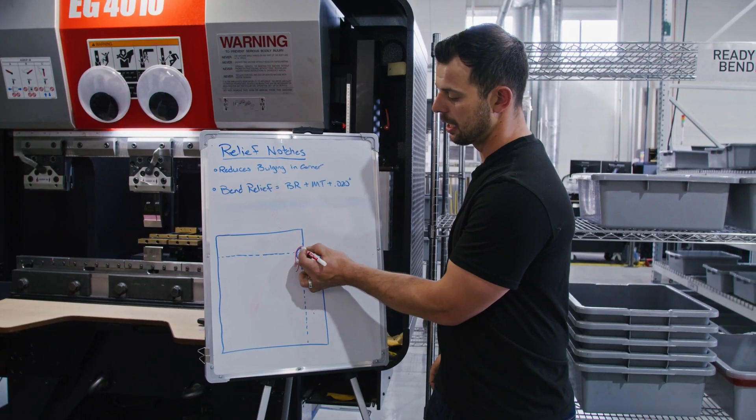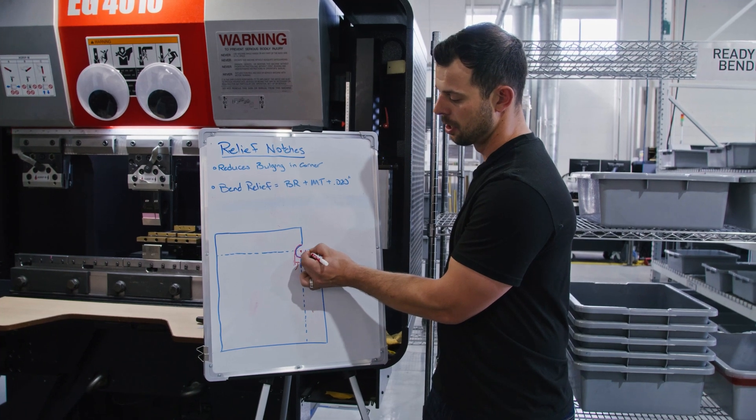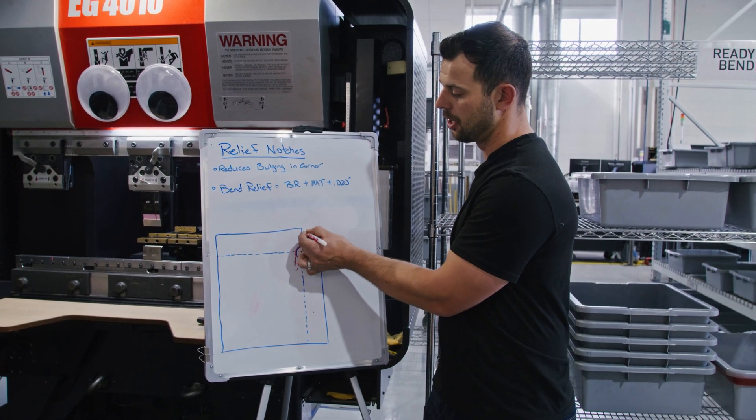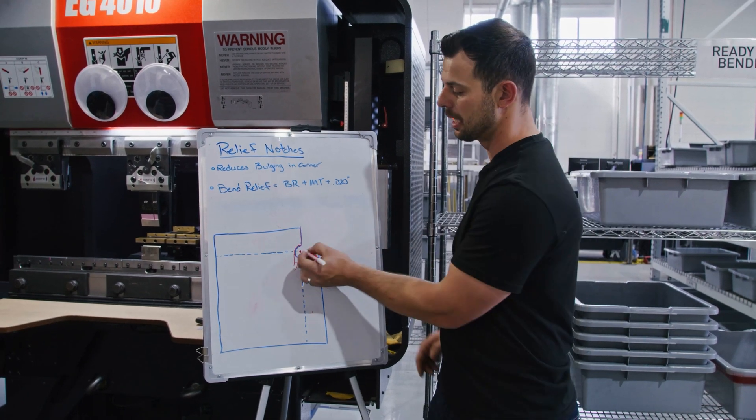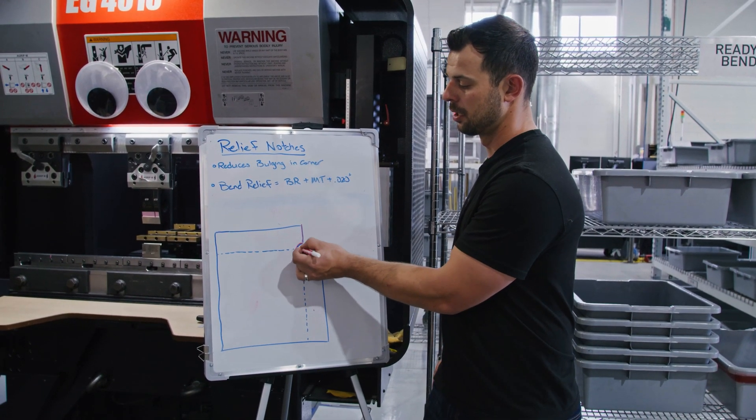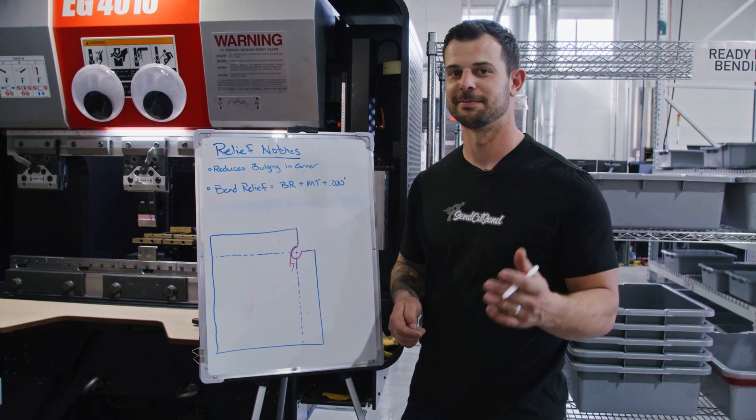You're going to end up putting that in here. That's going to give you a circle. You can end up finishing your flanges off, and as that gets bent up, you're going to have a nice clean bend on both of those. Thanks for watching. Stay tuned for more.